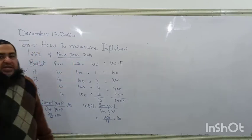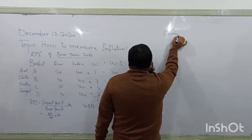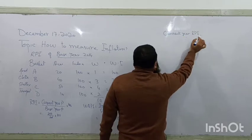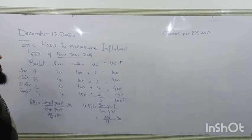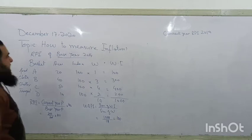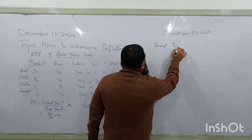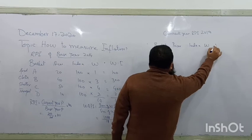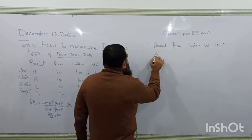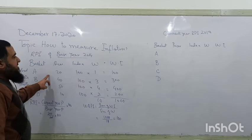Now for the current year 2019, we take the same basket of goods and collect new prices to calculate the current year retail price index. We record the new prices, calculate the index for each commodity, apply the same weights, and compute the weighted index.